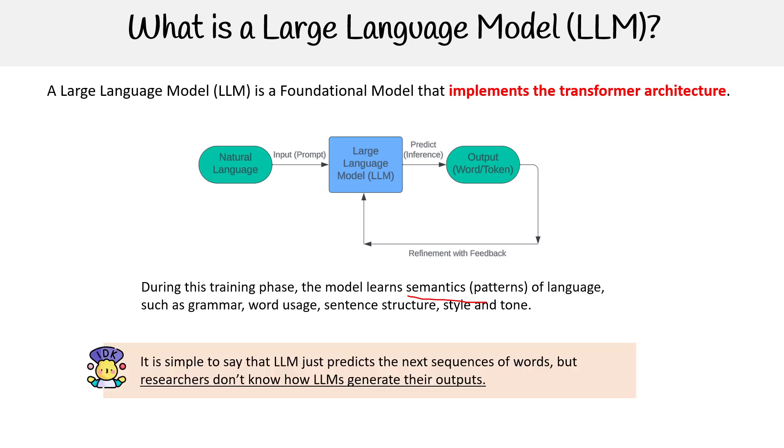It would be simple to say that LLMs just predict the next sequence of words, because as you use the model, it outputs a word and keeps feeding it back in again and again until it's done.